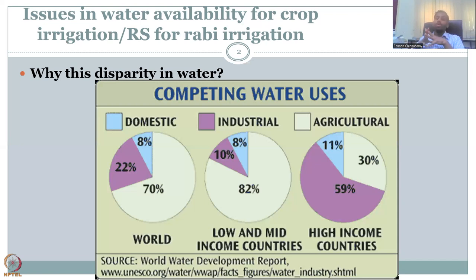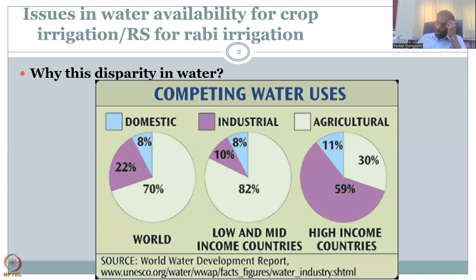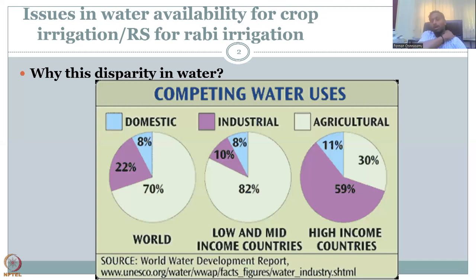Looking at import-export data, a lot of food — initially just grains — was going from Asian countries to developed countries. But now even perishable items like fruits, fish, and meat are being exported at very high cost. This constitutes a lot of virtual water trade, and the current price of water is not accurately reflected. For this lecture, we focus on where agricultural water is going and how remote sensing tools address this.